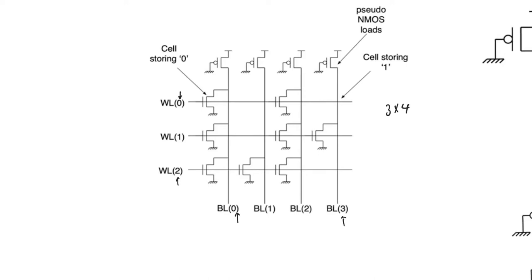At the intersection of each row and column there is a cell. There are two different kinds of cells: cells that contain NMOS transistors and cells that do not. Cells containing NMOS transistors store a logic 0; cells not containing NMOS transistors store a logic 1.